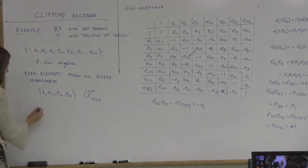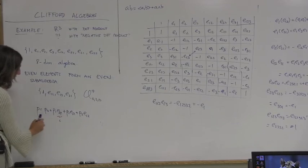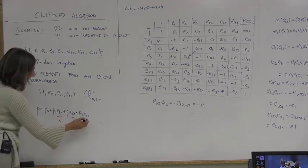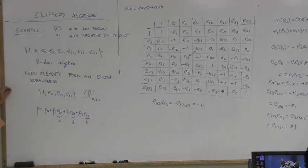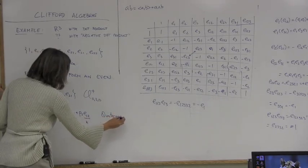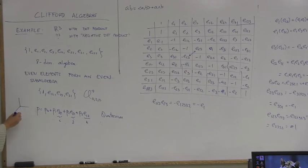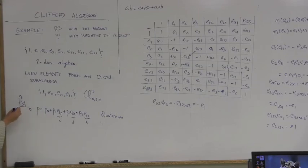A general element of this even subalgebra looks like a Hamilton's quaternion. If you call E23 = i, E31 = j, E12 = k, you have a quaternion. That's why we organize the bivectors in this way — so E23 is i, E31 is j, and E12 is k.